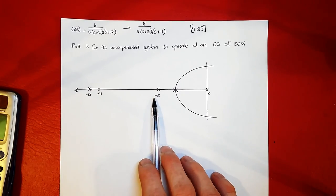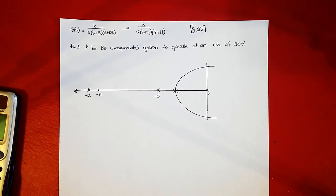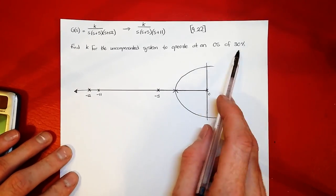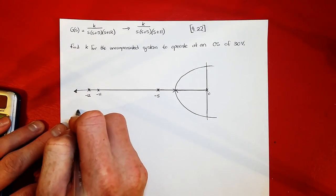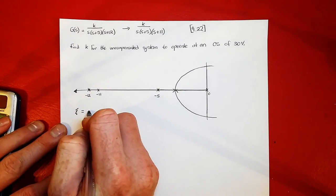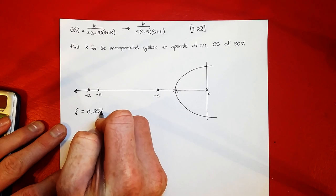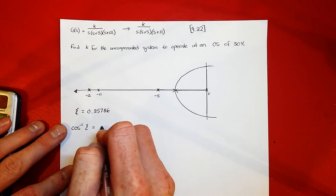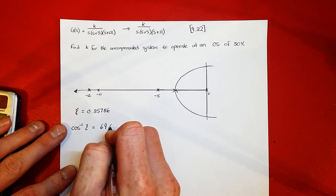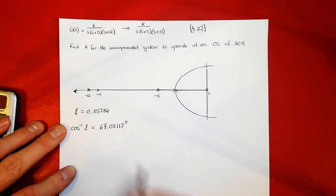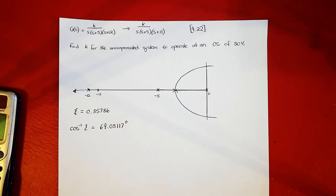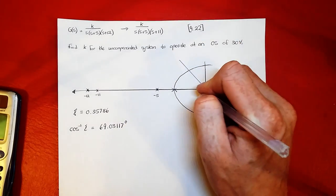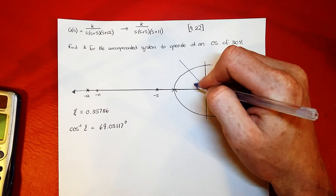Here's just a rough sketch of the root locus. All we have to do now is find the point K somewhere along this line where we satisfy the 30% overshoot. From the 30% overshoot we know that zeta equals 0.35786 and cos inverse of that is equal to 69.03 degrees. So that's a line, we know that is 69 degrees.